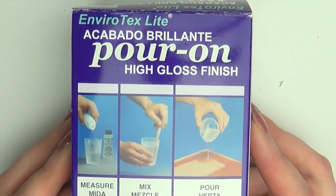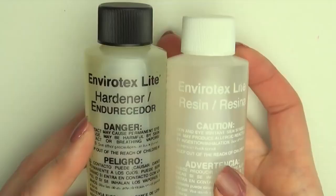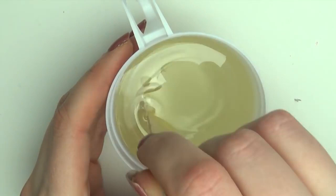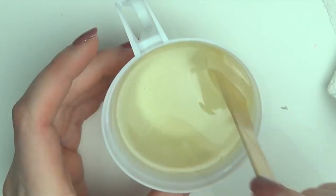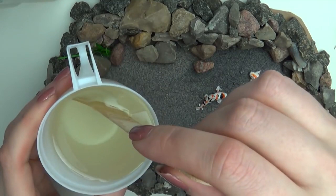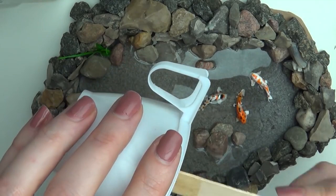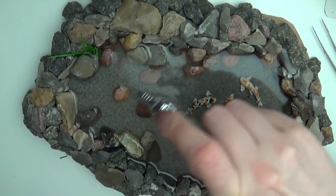Now get out your resin and mix the two components equally in a cup. Now slowly pour the resin in the pond. I didn't have quite enough resin in this batch, so I mixed another cup and poured it on top. If air bubbles start rising to the surface, you can pop them with the heat from a lighter. Leave the resin to set overnight before moving it.